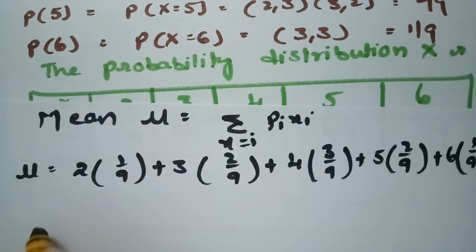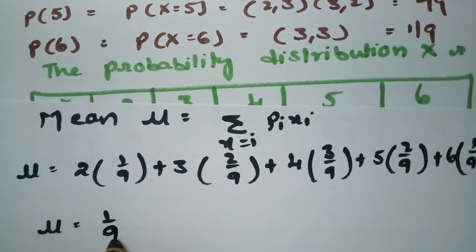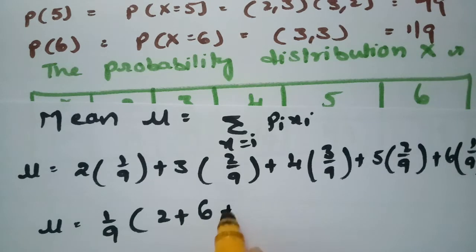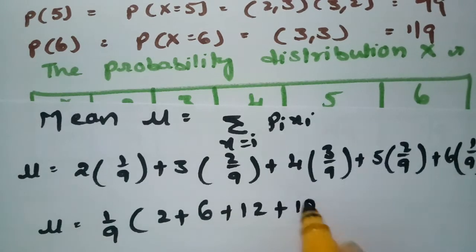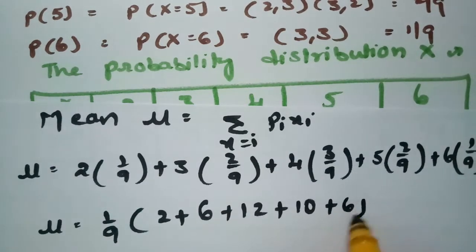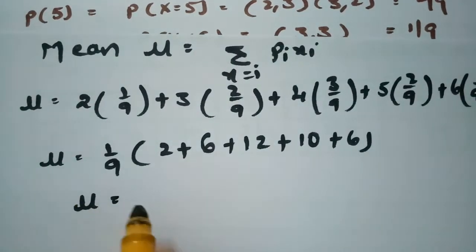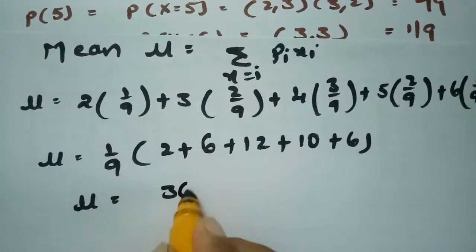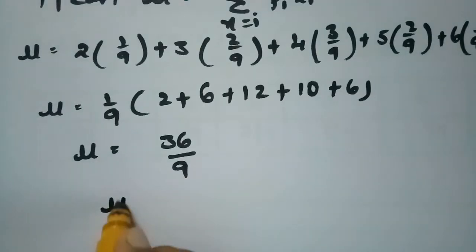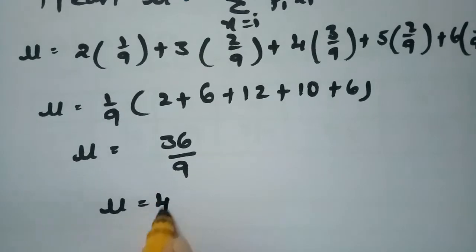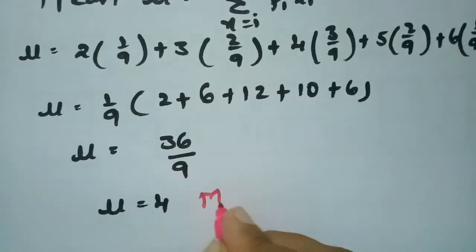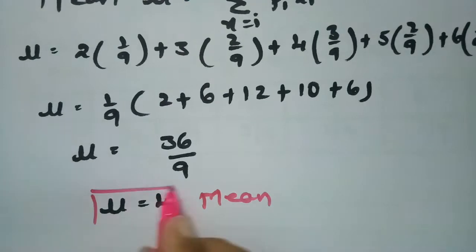Taking 1/9 common: μ = (1/9)(2 + 6 + 12 + 10 + 6) = 36/9 = 4. So the value of mean is 4.